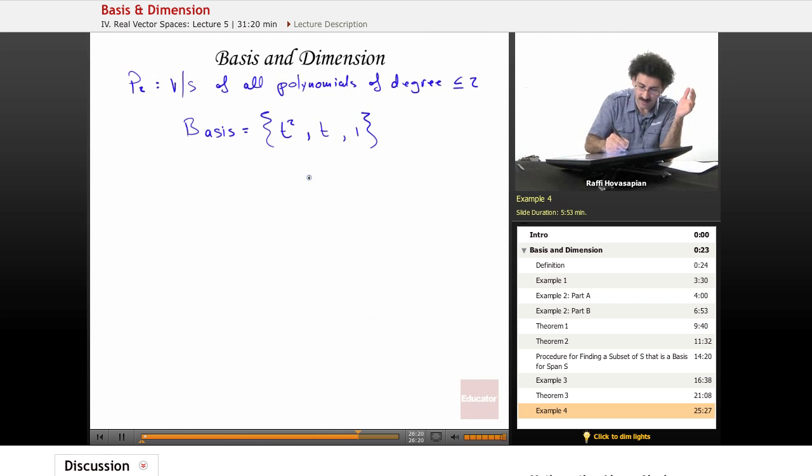For example, 3t squared plus 6t minus 10. Well, it's 3 times t squared, 6 times t minus 10 times 1. 3t plus 2, 3 times t, 2.